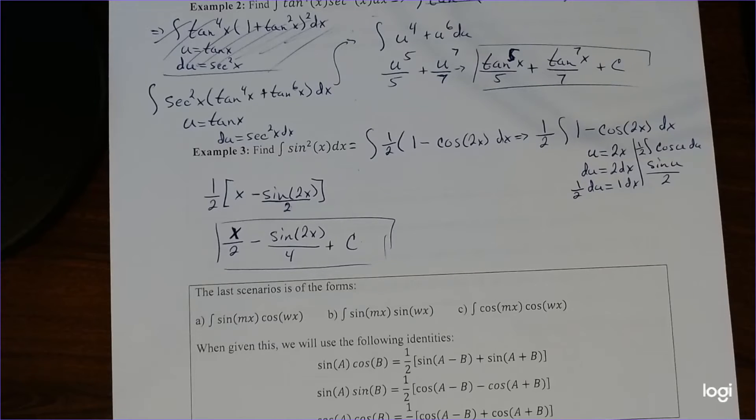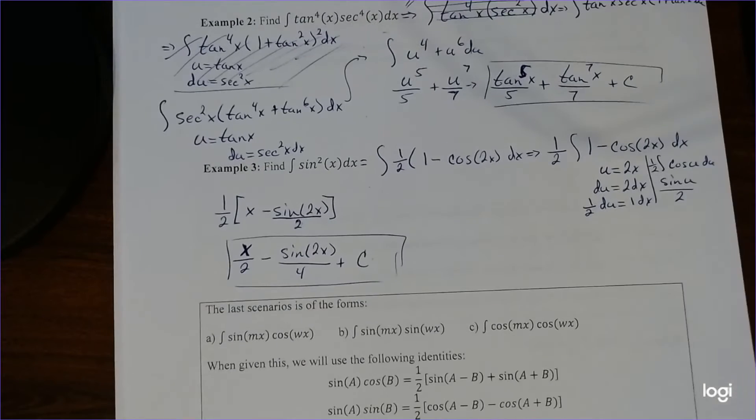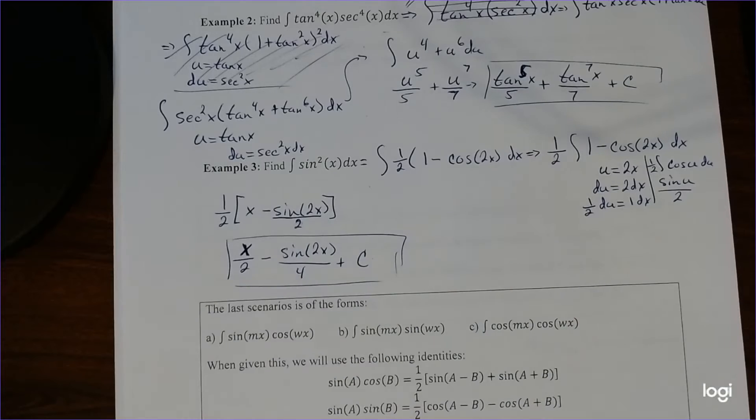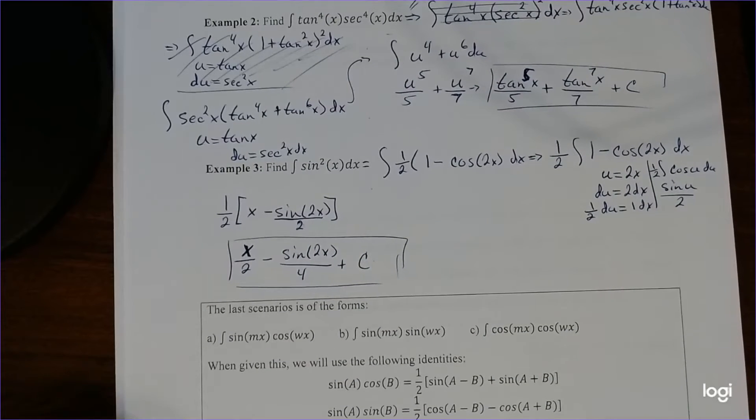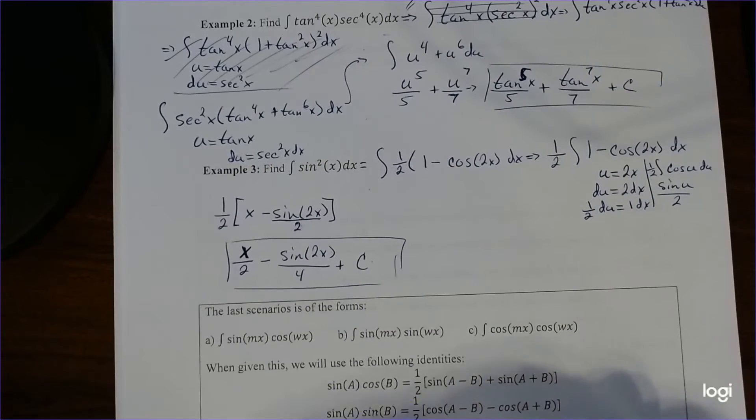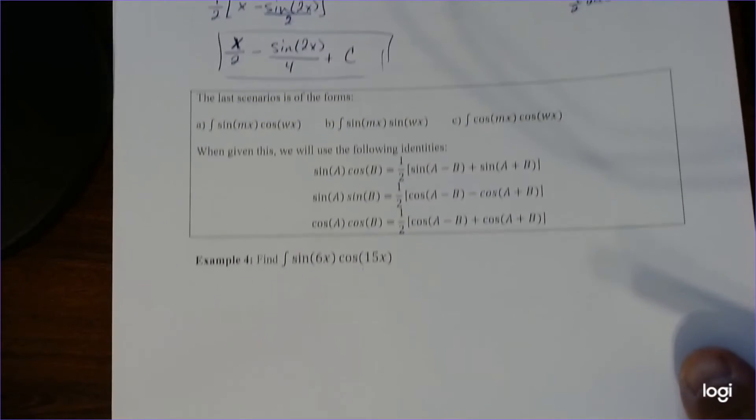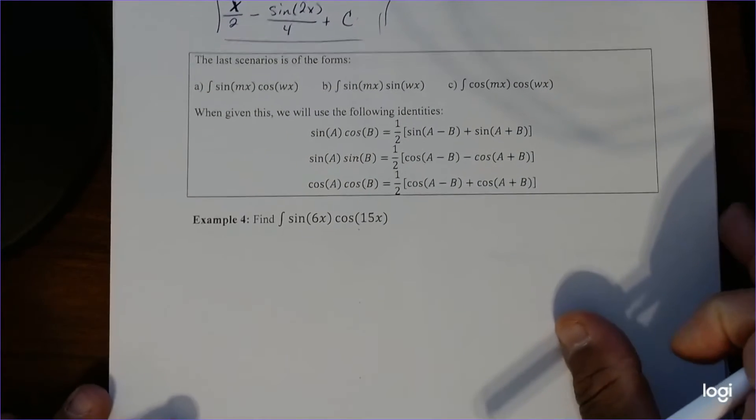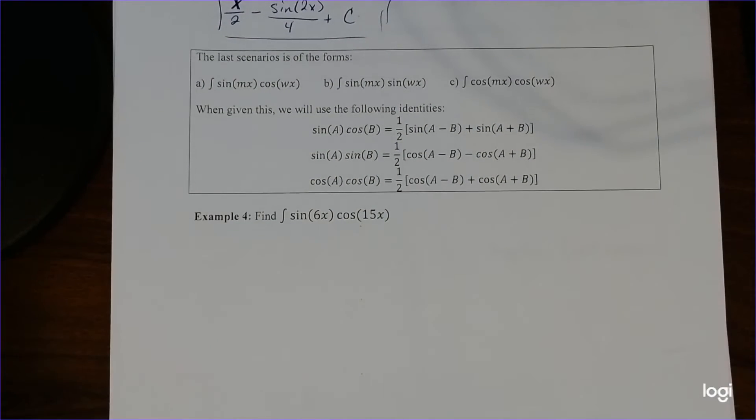Alright, and the last part is, what if everything fails? Or what if we have an alternative to this? So kind of like we have here, is what if we have numbers inside the sine or cosine, respectively? So this is the last scenario in this portion, is what if we have the integral where m and w are real numbers, like 5 and 7, or 2 and 5, or negative 5 and 3, and things like that.